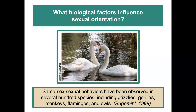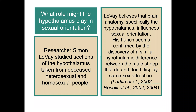What biological factors influence sexual orientation? Same-sex sexual behaviors have been observed in many different species, including grizzlies, gorillas, monkeys, flamingos, and owls. Researcher Simon LeVay studied sections of the hypothalamus taken from deceased heterosexual and homosexual people. LeVay believes that brain anatomy — specifically the hypothalamus — influences sexual orientation. His hypothesis seems to be confirmed by the discovery of a similar hypothalamic difference between male sheep that do and don't display same-sex attraction.